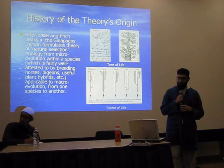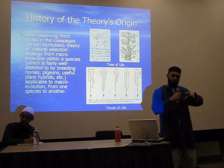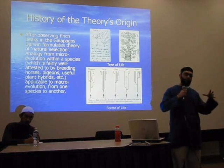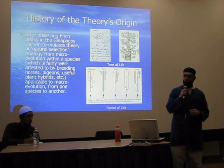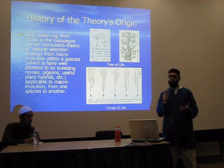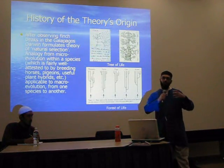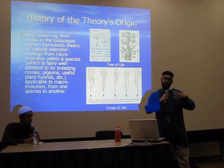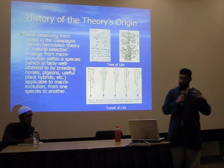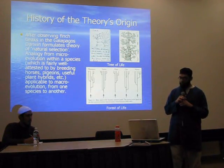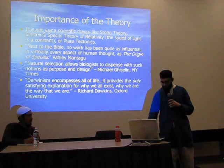Now, microevolution is fairly well attested to. You can breed horses, for example, or breed dogs, and you'll get different species of dogs or horses. So he's saying we can use analogy, expand that, and say that every single species evolved from another.